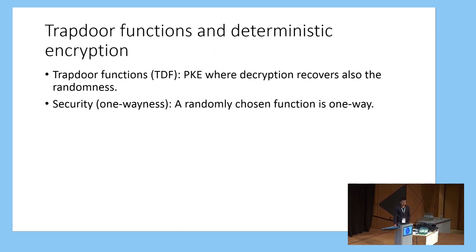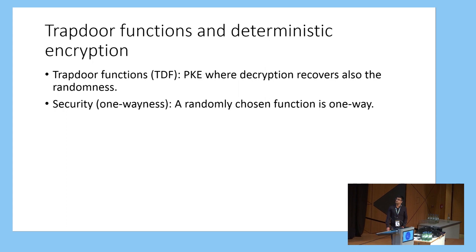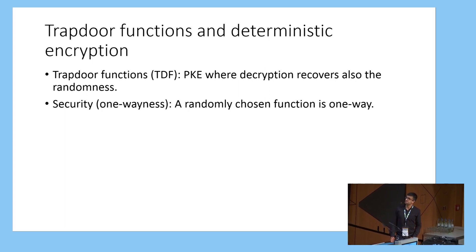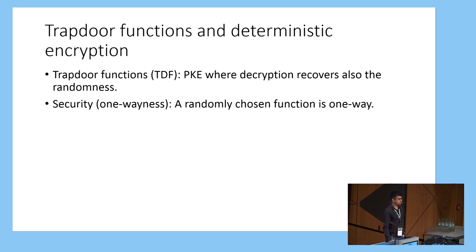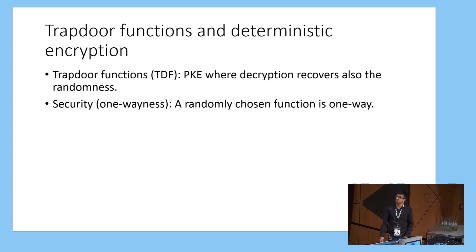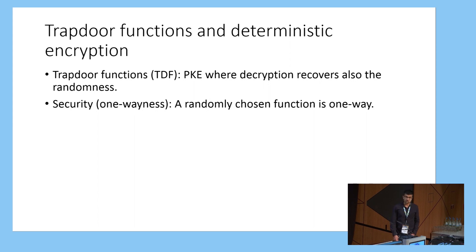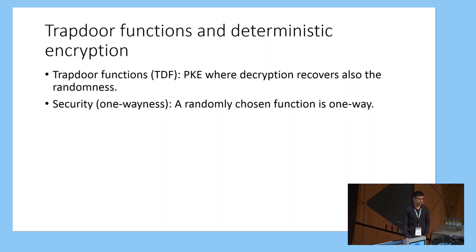Trapdoor functions, as you all may know, are a variant of public key encryption with the added feature that the decryption algorithm also recovers the randomness that was used by the encryption algorithm. In terms of security, we require one-wayness, which is the most basic form of security, which says that a randomly-chosen function from the family should be one-way.